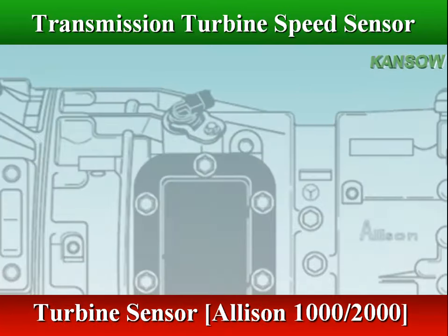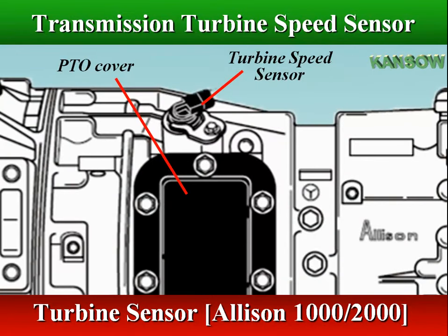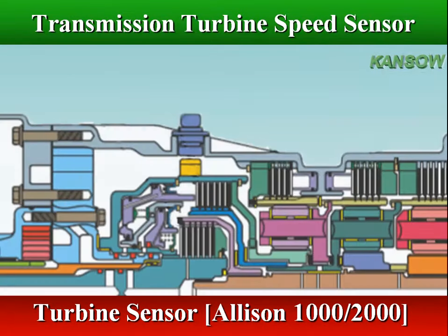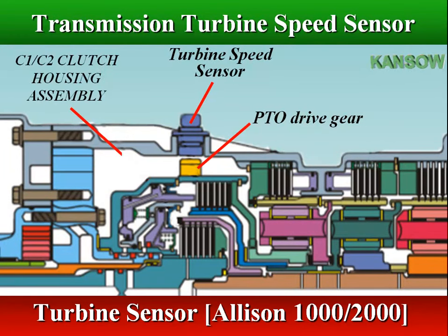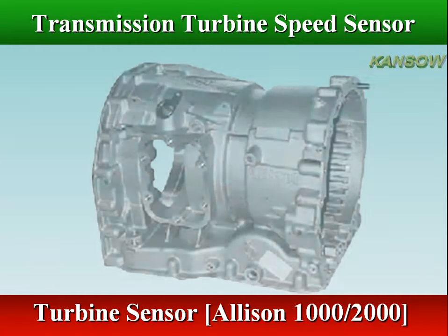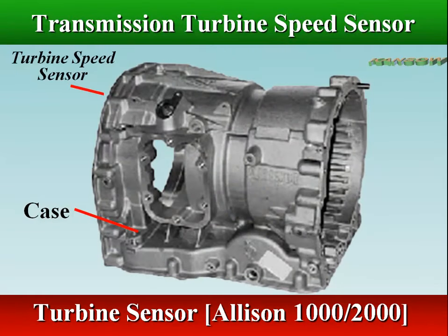In Allison 1000-2000 series, the turbine speed sensor is externally mounted in the main transmission case and directed at the tone wheel or PTO drive gear attached to the C1-C2 clutch housing.